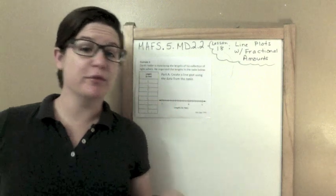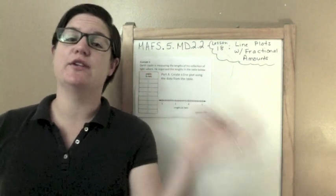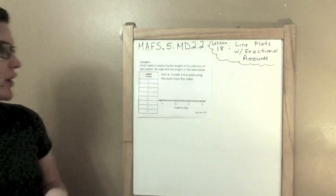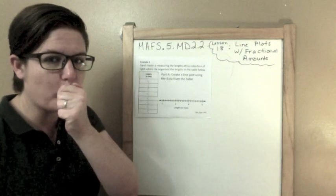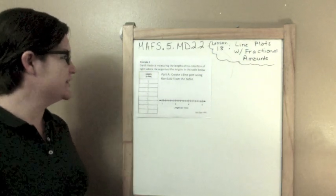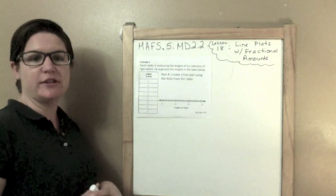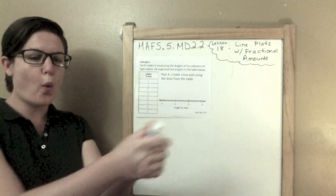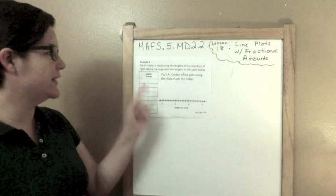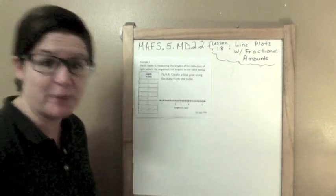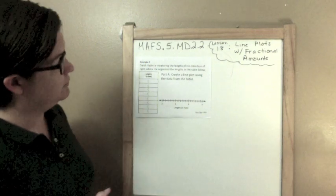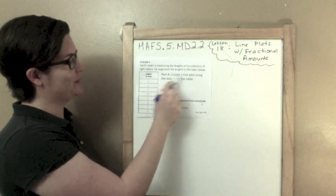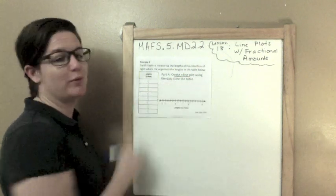Last one for today, it's example 3. The only thing is, example 3 is broken into part A, B, and C. It says Darth Vader is measuring the lengths of his collection of lightsabers. He's taking his lightsabers and measuring the lengths of them. He organized the lengths in the table below. He has a lot of spare time. So here are the lengths.